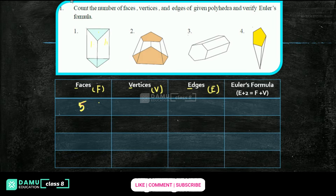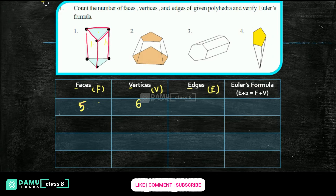How many vertices? Where two or more line segments join, that is a vertex. Counting: 1, 2, 3... so 6 vertices. Then how many edges? Edges are the line segments. Counting 1 through 9: top 3, down 3, surrounding 3 — so 9 edges.